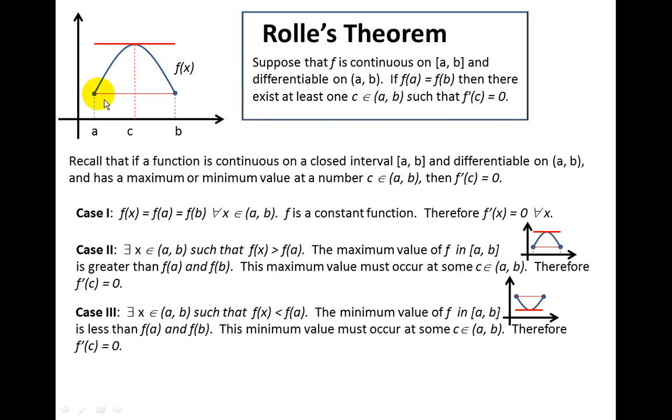Now notice that this function starts here at f(a), goes up, has a high point, and then starts to decrease all the way back down to f(b). This maximum in here is going to have a tangent with a slope of zero.